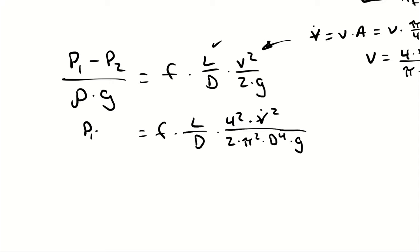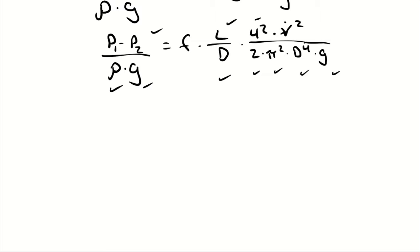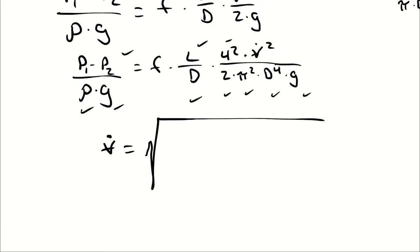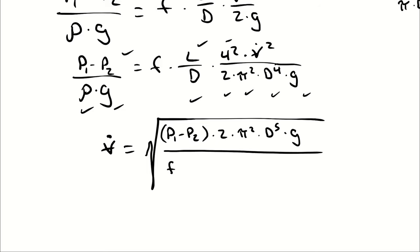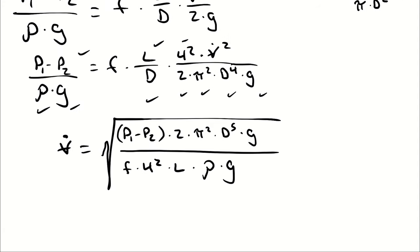In this relationship, P1 minus P2 is known, density of gasoline at 20°C can be looked up, gravity is standard, length and diameter are known. Everything is known except volumetric flow rate Q. Solving for Q gives: Q = √[(P1−P2) × 2π²D⁵g / (F × 16 × L × ρg)]. Gravity cancels gravity.